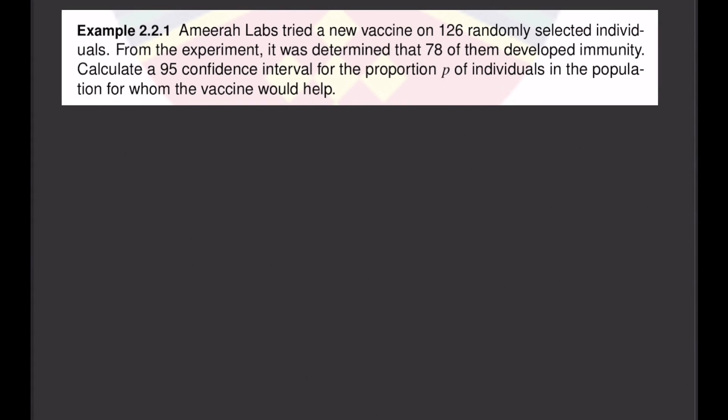In this video, we are going to calculate confidence intervals for a population proportion. Let's have our first example. Amira Labs tried a new vaccine on 126 randomly selected individuals. From the experiment, it was determined that 78 of them developed immunity. Calculate a 95% confidence interval for the proportion P of individuals in the population for whom the vaccine would help.